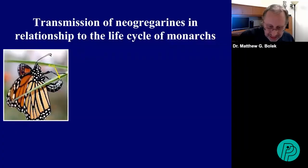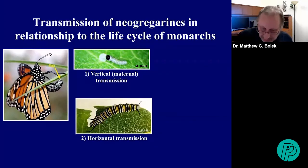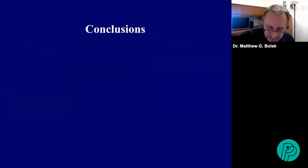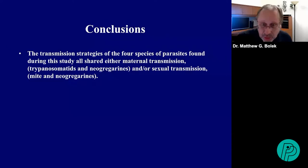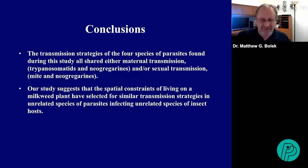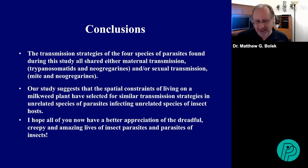How do these parasites get transmitted in relation to monarch butterfly life cycles? There is vertical maternal transmission — very similar to those bugs with the trypanosomes. There is also horizontal transmission where some spores get left behind on milkweed leaves and caterpillars ingest them. And we've now been able to show there is also sexual transmission. In conclusion, the transmission strategies of four species of parasites found during this study all shared either maternal or sexual transmission, even though those parasites and hosts had very different evolutionary histories. Our study suggests that the spatial constraints of living on milkweed plants have selected for similar transmission strategies in unrelated species of parasites infecting unrelated species of insect hosts.